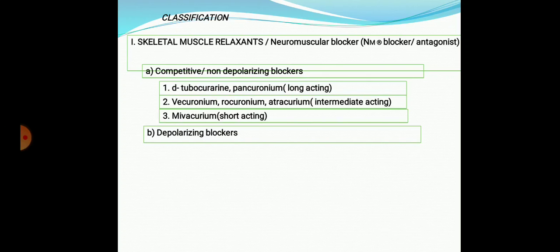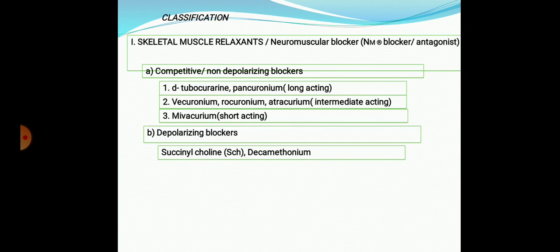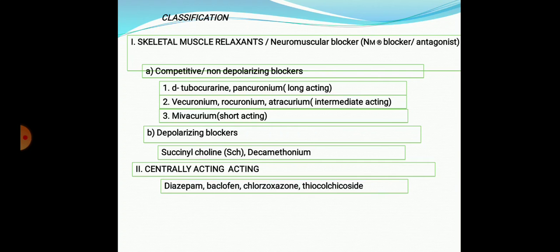Depolarizing blockers can activate NM receptors but continue to activate them without a halt. The continuous activation leads to desensitization of the receptor and skeletal muscle relaxation. Example: succinylcholine, which structurally resembles acetylcholine and binds to the NM receptor and activates it, but is not removed because no enzyme is available to break it down at the synapse. It continues to activate the NM receptor until it becomes desensitized. Decamethonium is another example. Centrally acting skeletal muscle relaxants include diazepam, baclofen, chlorzoxazone, and tizanidine, all acting at the spinal cord level by facilitating GABA-mediated inhibitory neurotransmission.